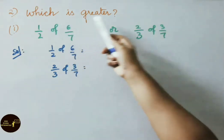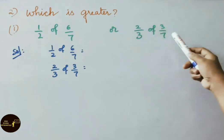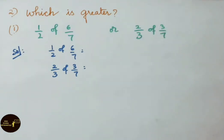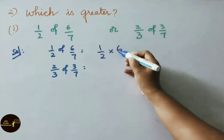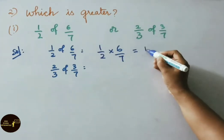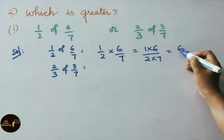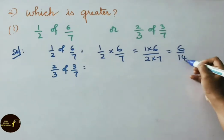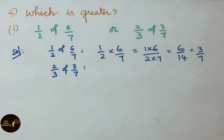Question number 2: which is greater? First sum — 1 by 2 of 6 by 7, or 2 by 3 of 3 by 7? We have to find which fraction is greater. For 1 by 2 of 6 by 7: 'of' means 'into', so write 1 by 2 into 6 by 7. Multiplying numerators: 1 into 6 is 6, 2 into 7 is 14. In the 2 times table, 2 threes are 6 and 2 sevens are 14. So 1 by 2 of 6 by 7 equals 3 by 7.